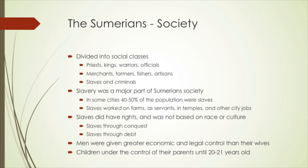Sumerian society was divided into different social classes. The highest social class included priests, later kings, warriors, and government officials. The next class included merchants, farmers, fishers, and artisans. The lowest class was slaves and criminals. Slavery was a major part of Sumerian society — in some cities, the slave population was between 40 and 50 percent of the entire city's population. Slaves had many different jobs: they worked on farms, as servants, in temples, and in city or bureaucratic roles.